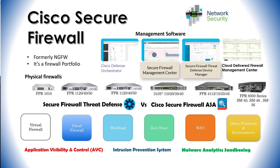Looking at the capabilities of these firewalls, the first is application visibility and control — you can enforce access control using applications, with identification of approximately 6,000 applications supported, as well as geolocation, users, and websites. Next is the intrusion prevention system: you have the ability to deploy the firewall as an IPS, which is now powered by Snort 3. Then there's Cisco Malware Analytics sandboxing for malware protection.